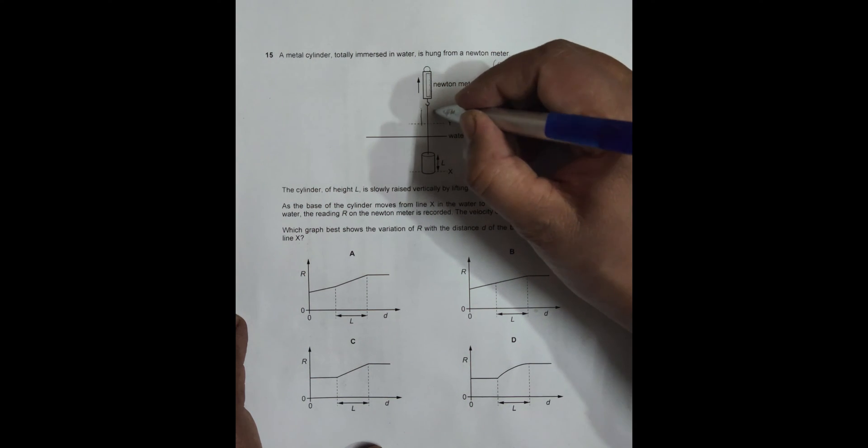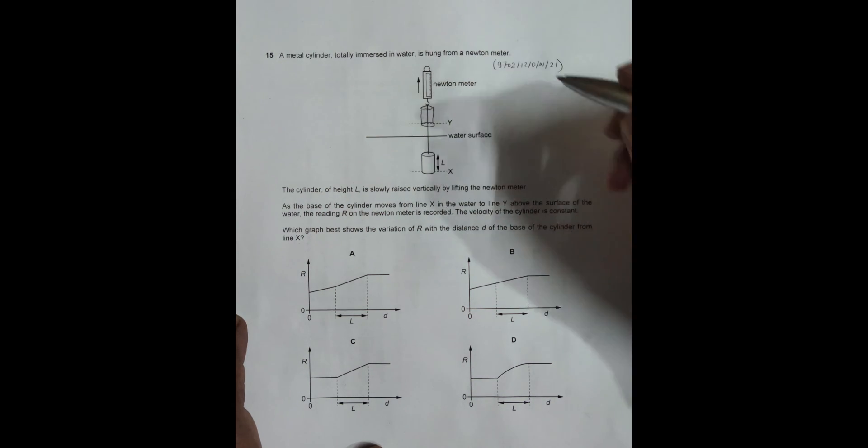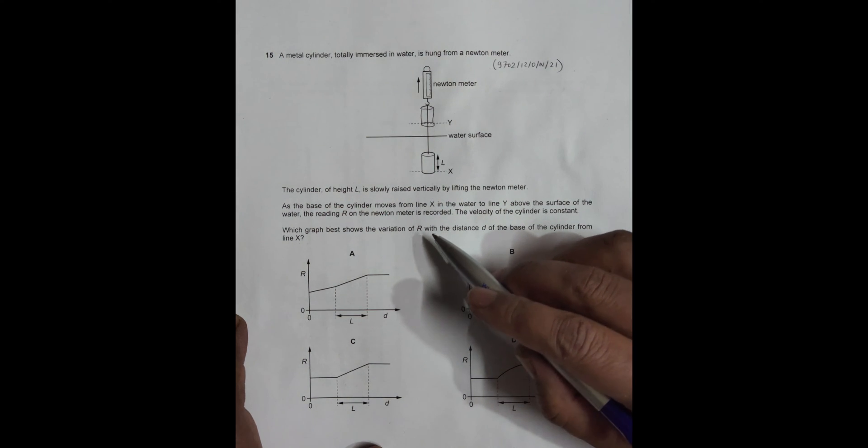That means this cylinder will ultimately be like this - this will be the final position of this cylinder. The reading on the Newton meter is recorded, the velocity of the cylinder is constant.